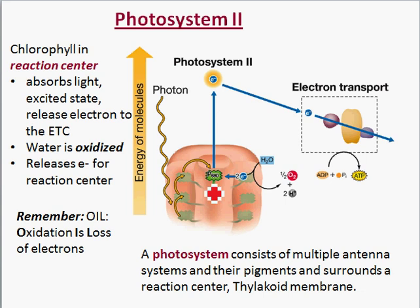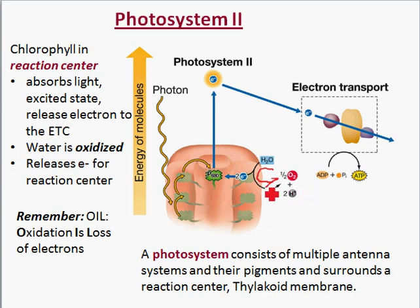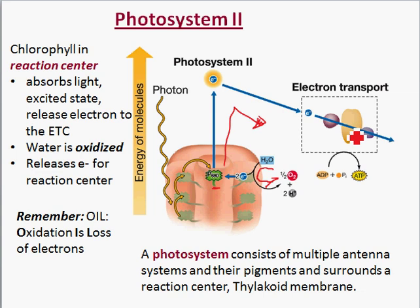This chlorophyll loses an electron — remember, oxidation is loss — so the chlorophyll is being oxidized. In order for this to keep happening, it has to gain back another electron, which it does from water. Water loses an electron, becomes oxygen, and that electron goes to the chlorophyll so the process can repeat. Water is oxidized to supply the electron, and the chlorophyll is reduced as it gains that electron.